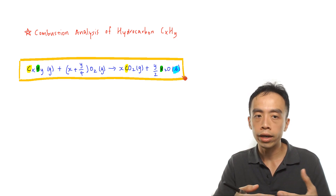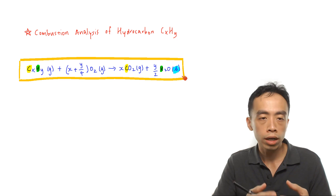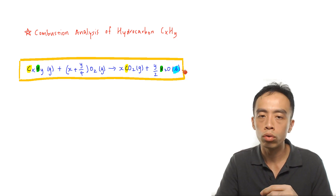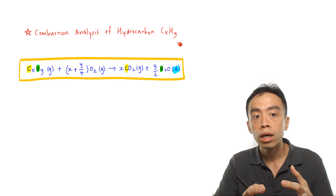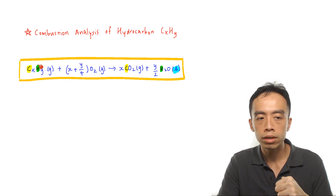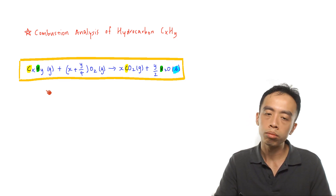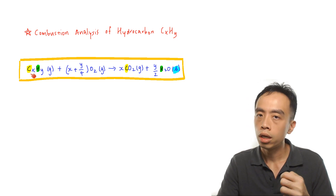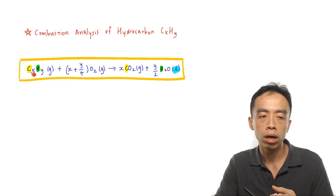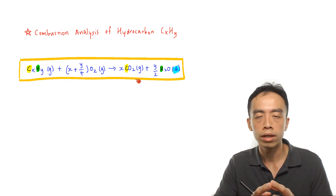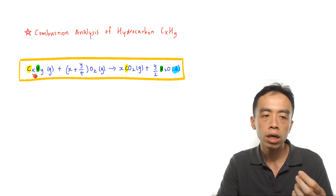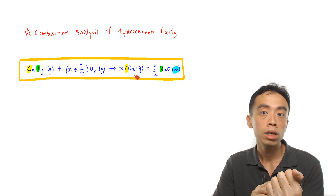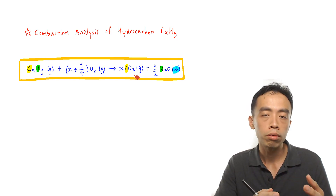Combustion analysis is a very simple technique but it is very useful for identifying an unknown gaseous hydrocarbon. If we burn this hydrocarbon in excess oxygen, we know the products will be CO₂ and water. All the carbon in the organic compound is converted to carbon dioxide — 100% of it. If we can capture this CO₂, we can measure how much carbon came from the hydrocarbon.